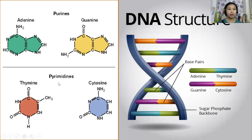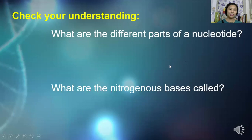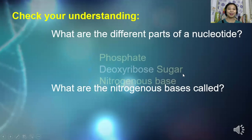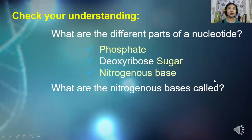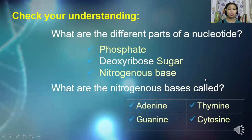To know which is which: pyrimidines usually contain the letter Y. Thus, pyrimidine with a Y — thymine with a Y, and cytosine with a Y. Then the rest will be categorized as purines. So let's check your understanding: what are the different parts of a nucleotide, and what are the nitrogenous bases called? The different parts of a nucleotide are the phosphate, deoxyribose sugar, and nitrogenous bases. The nitrogenous bases are adenine, guanine, thymine, and cytosine.